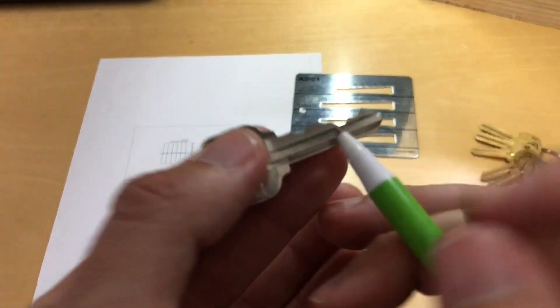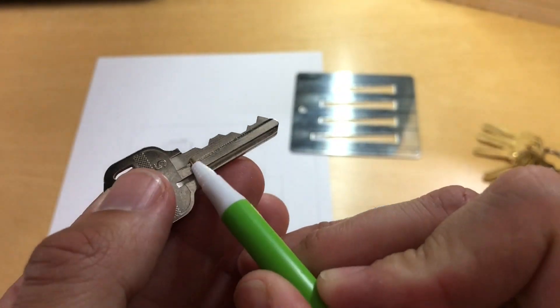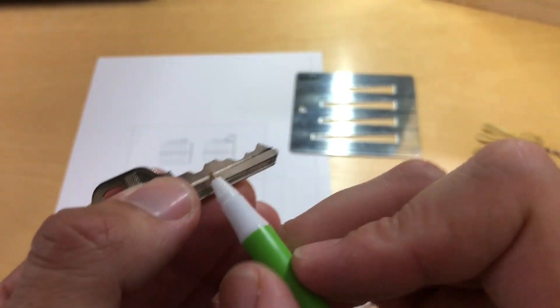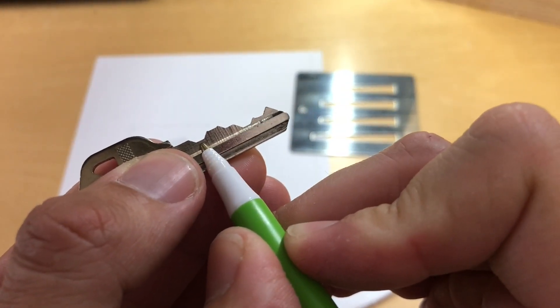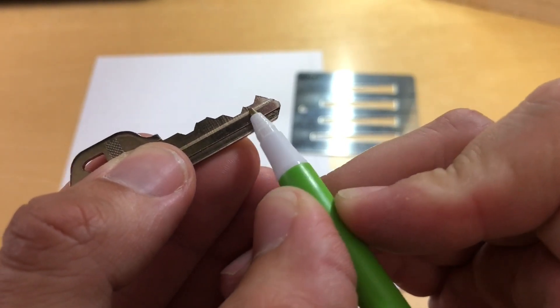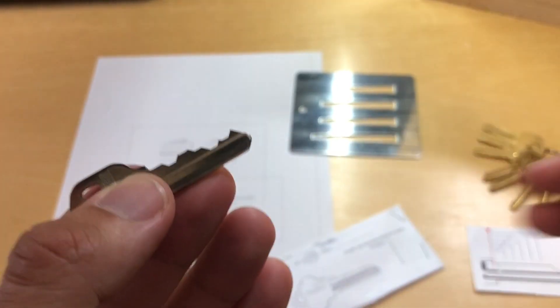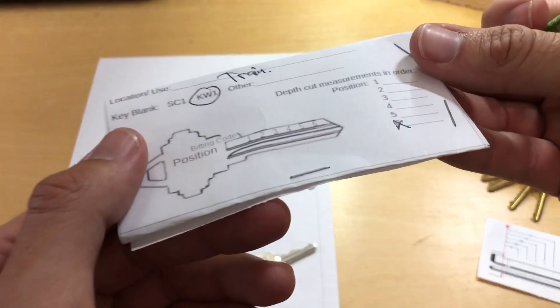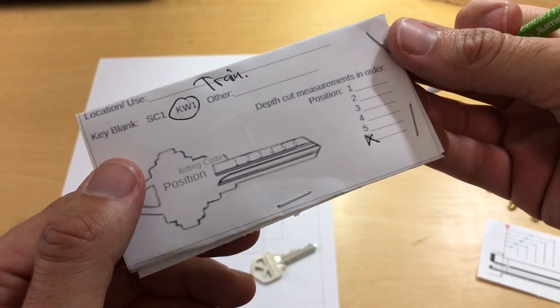And we're going to start reading from the bow of the key towards the tip of the key. We're going to measure these flat parts, these plateaus. So there's the first one, there's the second one, there's the third one, there's the fourth one, there's the fifth one, and then we're at the end. So we actually won't use that sixth placement in our key pouch.